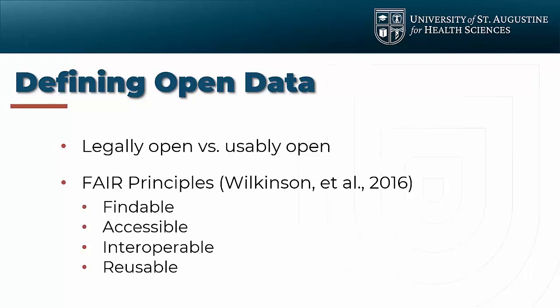FAIR came out of a focus group that tried to lay out principles to inform practitioners in making their data open so it would be as usable as possible. FAIR is an acronym standing for Findable, Accessible, Interoperable, and Reusable. The findability part really gets at the library side — choosing an appropriate registry, cataloging that data with enough information that somebody can find it through a search engine or a data index. Accessible gets at being able to not only reach and legally use the data, but also extract from it.